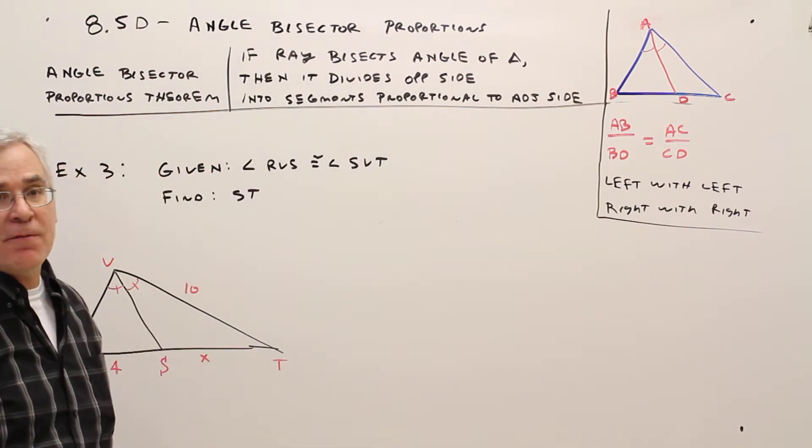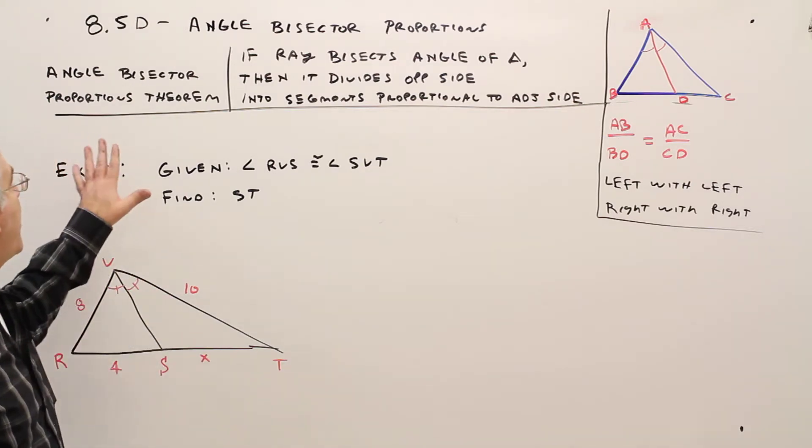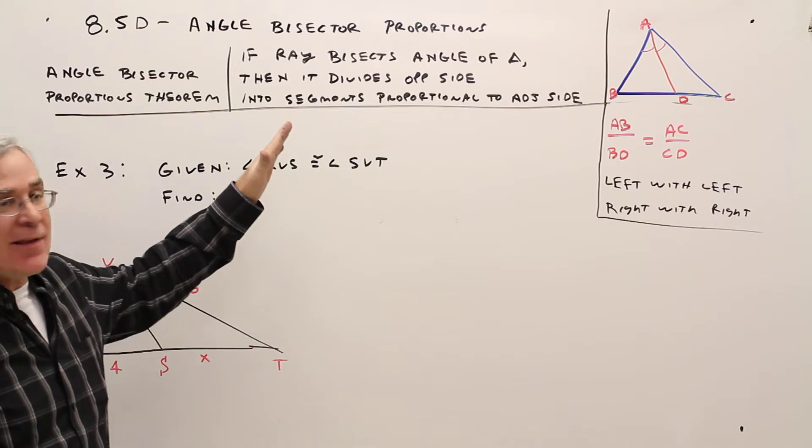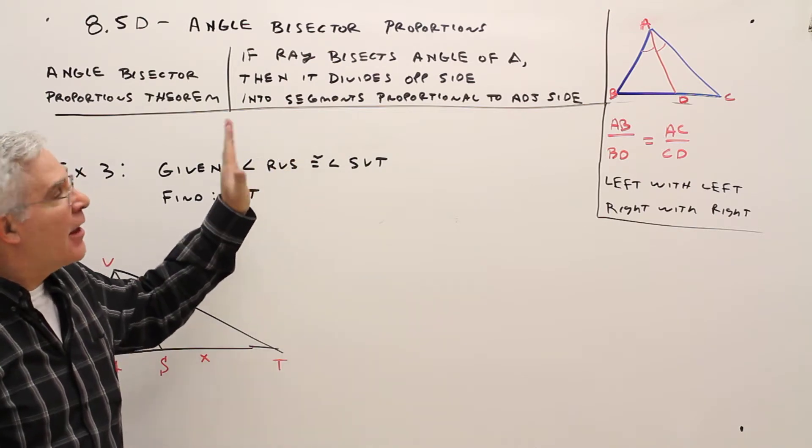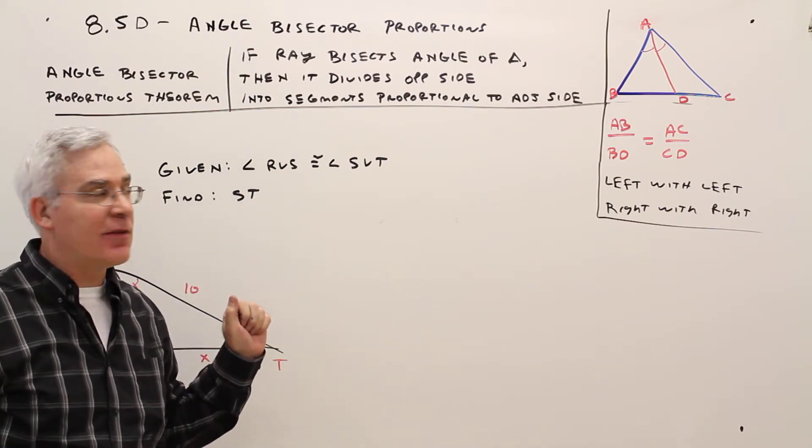Welcome to video 8.5D, Angle Bisector Proportions. So here's the angle bisector proportions theorem. If a ray bisects an angle of a triangle, then it divides the opposite side into segments proportional to the adjacent sides.